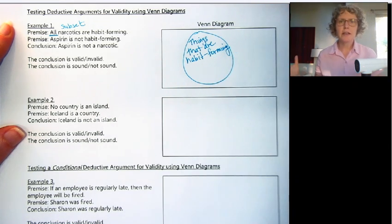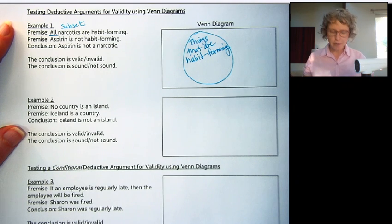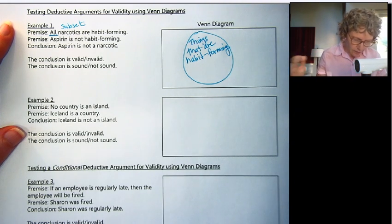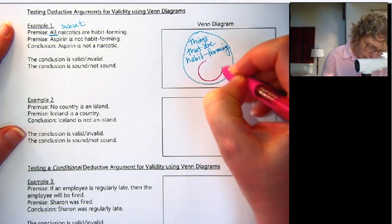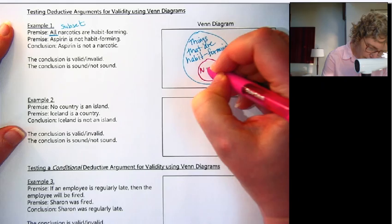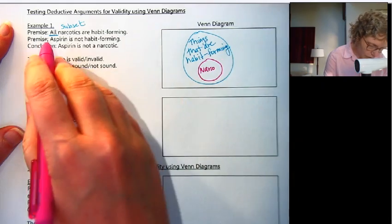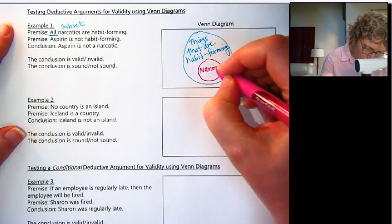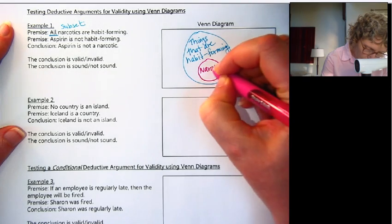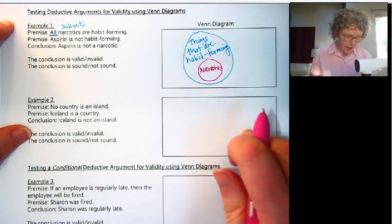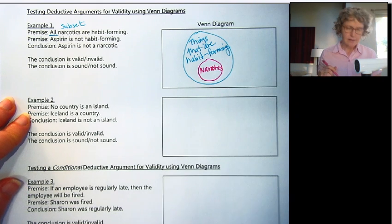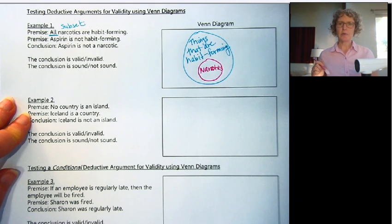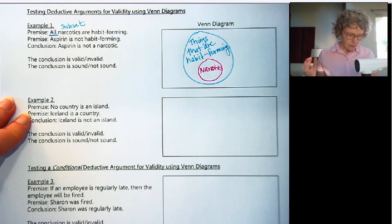Watching TV, gambling, alcohol — lots of things are habit-forming. Narcotics is one of them. So narcotics is a subset of things that are habit-forming. That's our first premise.